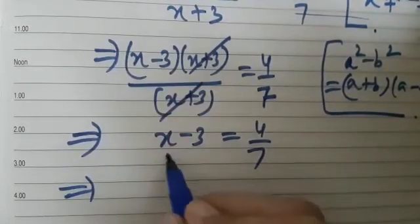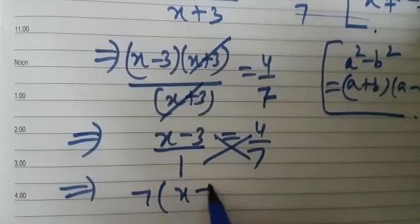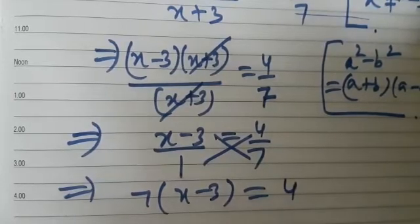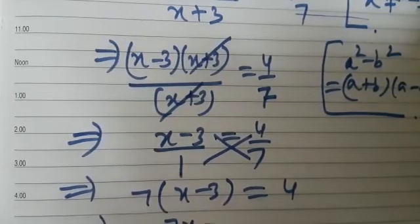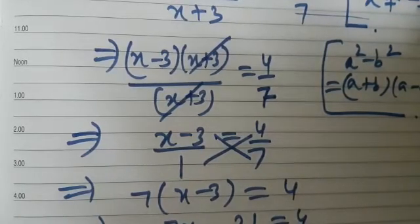How will you solve this? Yes, you can cross multiply, and you see that 7 into x minus 3 will equal 4. This implies 7x minus 21 equals 4.